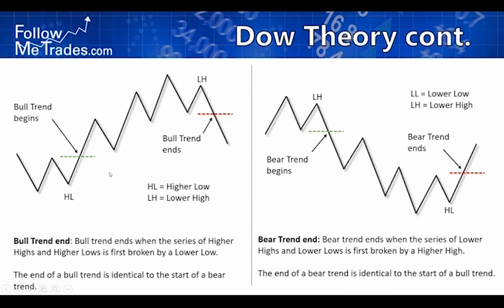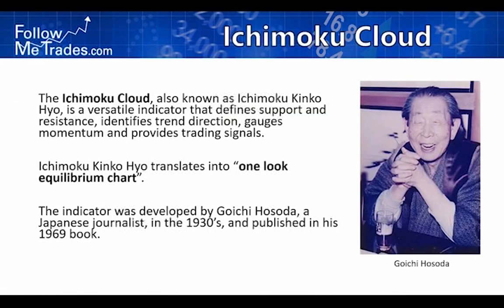Ichimoku Cloud — I started using this in my trading about two years ago and it's made a big difference. Goichi Asada is the gentleman who developed it. He began working on it in the 1930s in Japan — he was actually a Japanese journalist, not a mathematician or finance person. He published it in a book in 1969, and now it's available on virtually any trading platform as a free indicator.